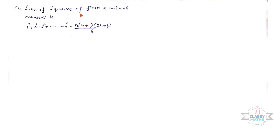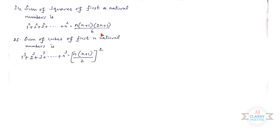Twenty-fourth one: Sum of squares of first n natural numbers is 1² + 2² + 3² + ... + n² = n(n + 1)(2n + 1)/6. Sum of cubes of first n natural numbers is 1³ + 2³ + 3³ + ... + n³ = [n(n + 1)/2]².